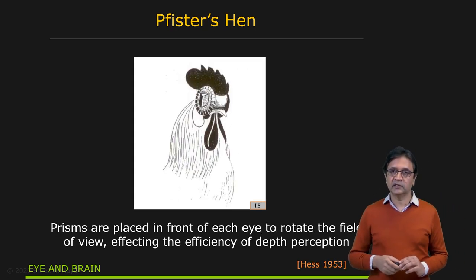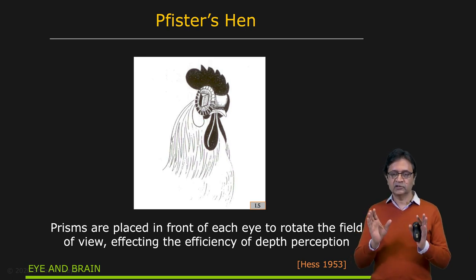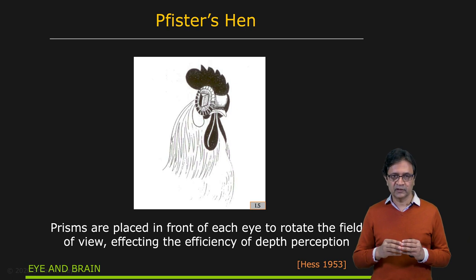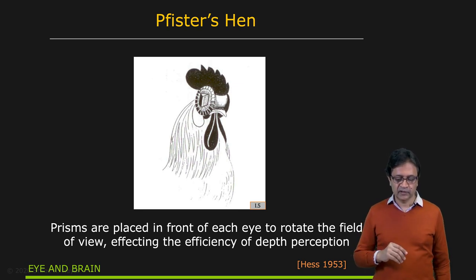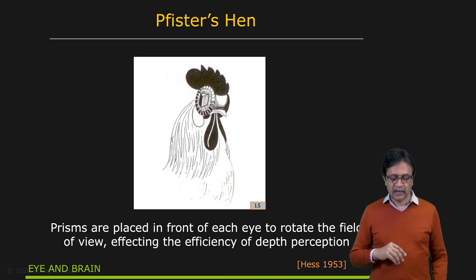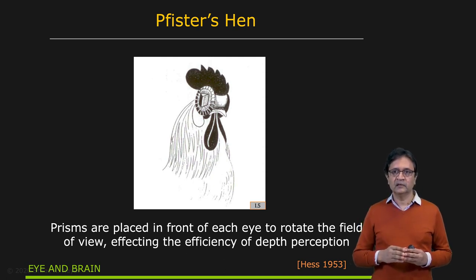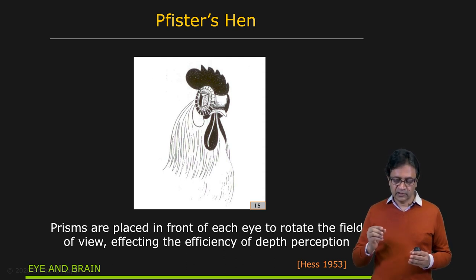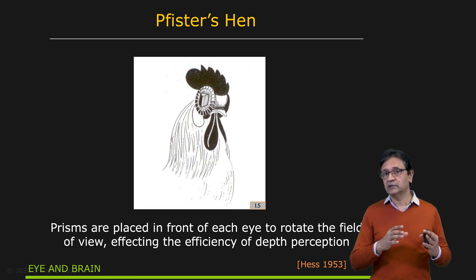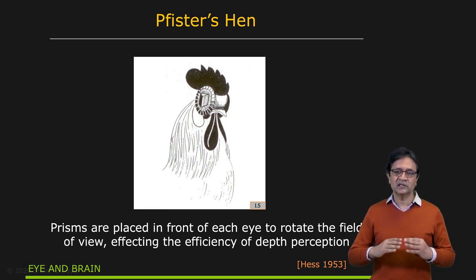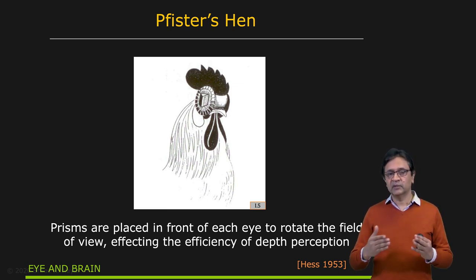Unfortunately, this adaptability is not true for other animals. In experiments with Pfister's hen, prisms were placed in front of the animals' eyes to rotate their field of view by 7, 10, or 15 degrees. When a hen tries to peck on a grain, it ends up pecking in the wrong place. While humans and monkeys can adapt to shifted or inverted images, lesser animals such as the hen simply cannot. Even after months, they are not able to adapt to this new vision, and unfortunately end up starving to death.